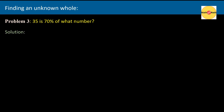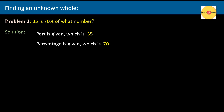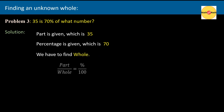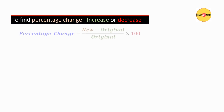Let us do one more problem: 35 is 70 percent of what number? In this problem, the part is given, which is 35, and the percentage is given, which is 70. We have to find the whole. Using the percentage formula and substituting the given values, on simplification we get 50.